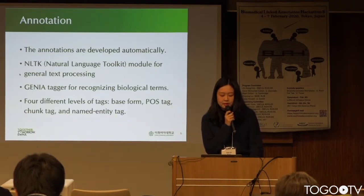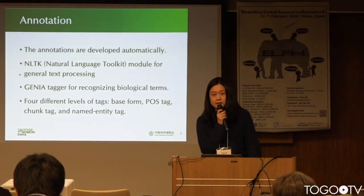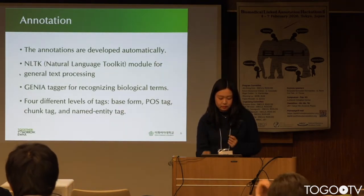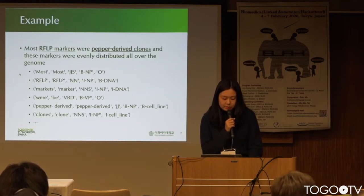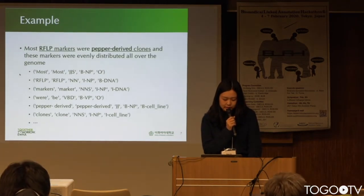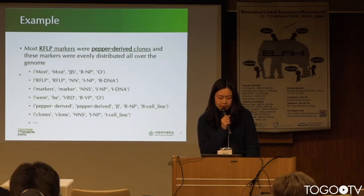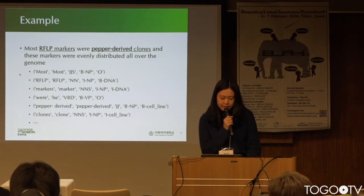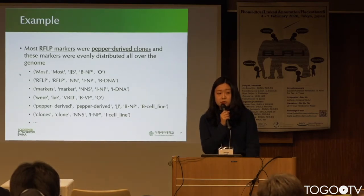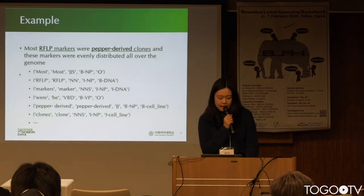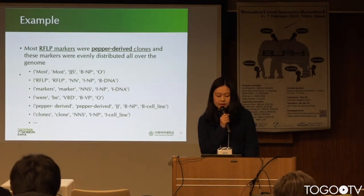Four different levels of tags are attached for each word in the sentence: base form, part-of-speech tag, chunk tag, and named entity tag. For example, from the sentence 'most RFLP markers were paper-derived clones, and these markers were evenly distributed all over the genome,' the word RFLP markers is tagged as DNA, and the phrase paper-derived clones is tagged as a cell line.